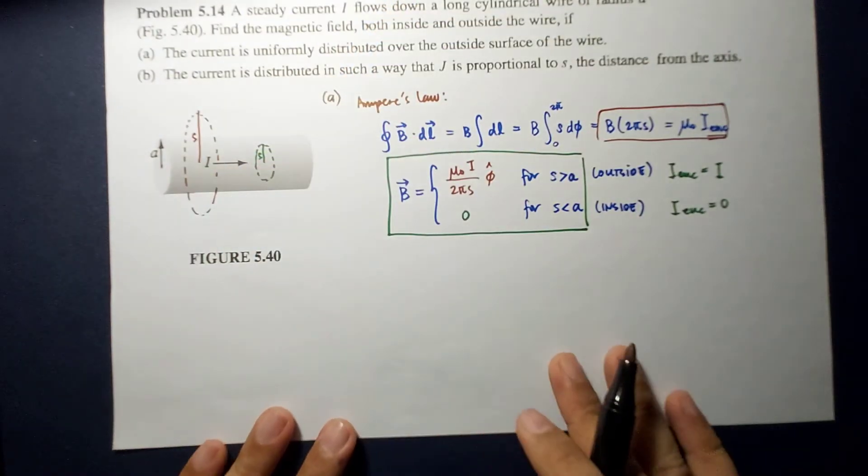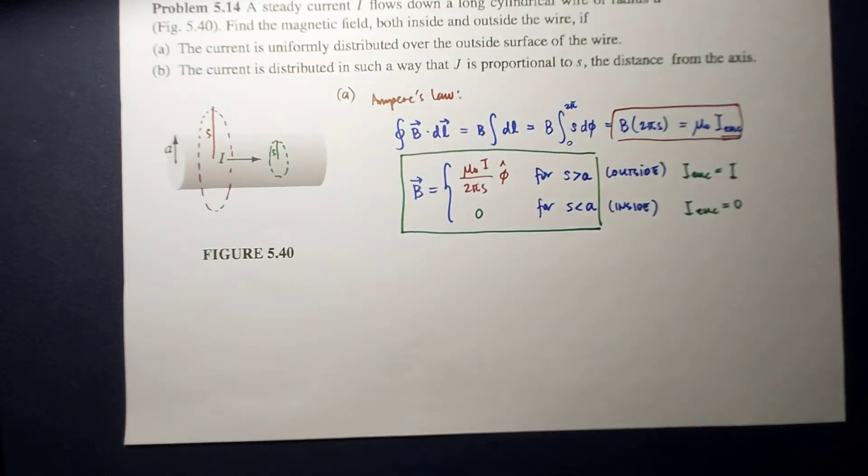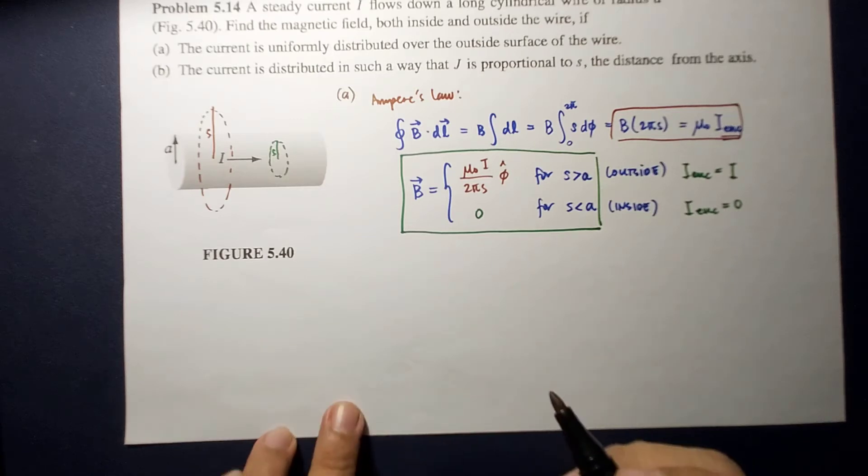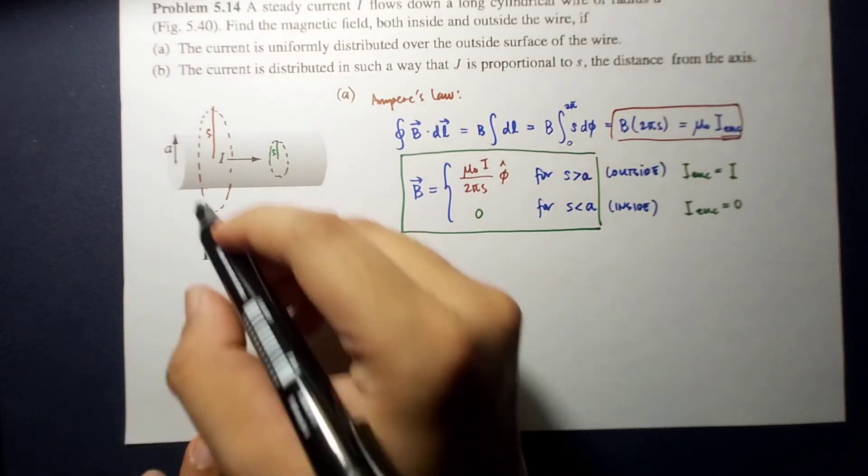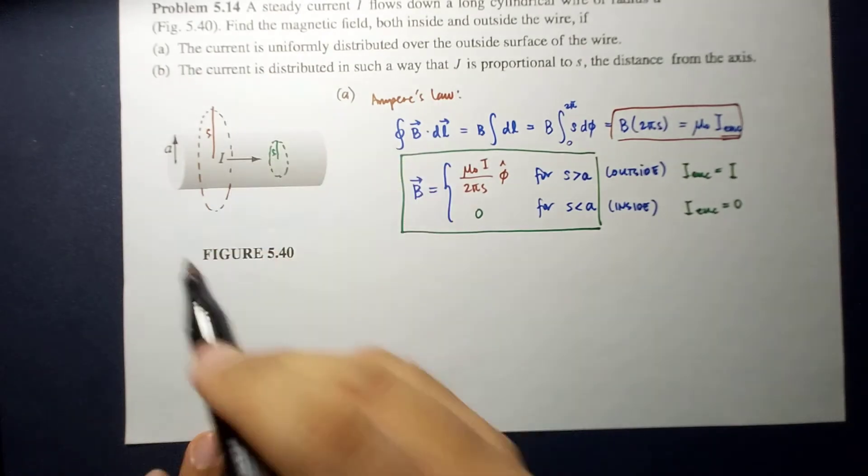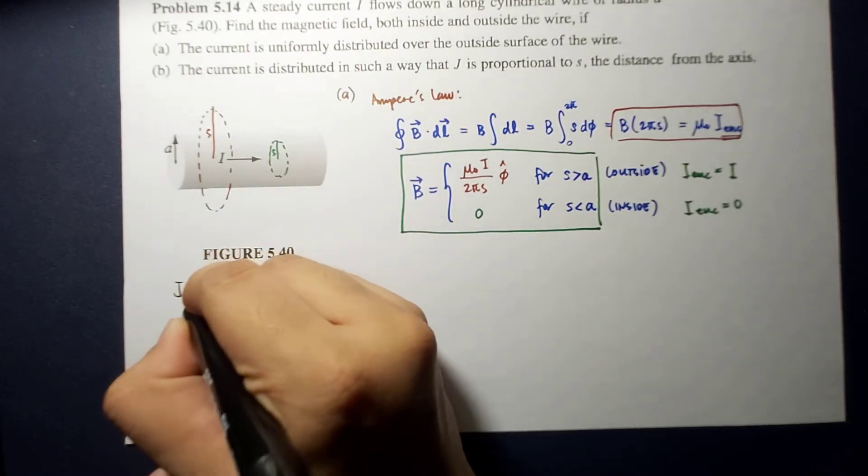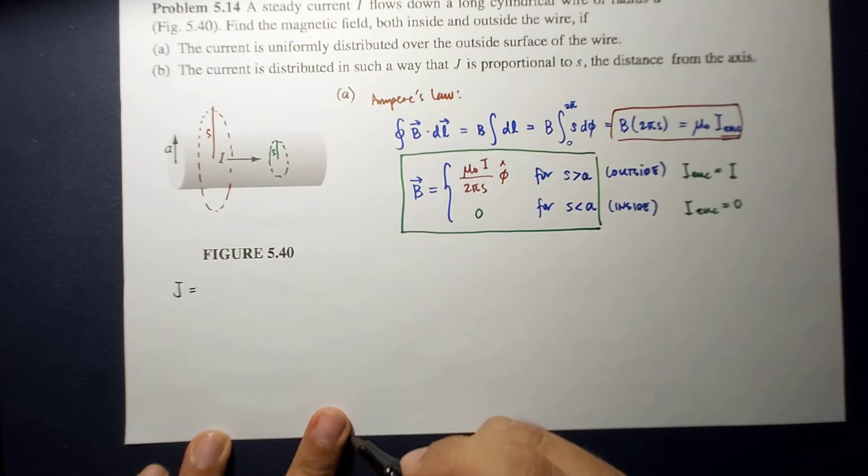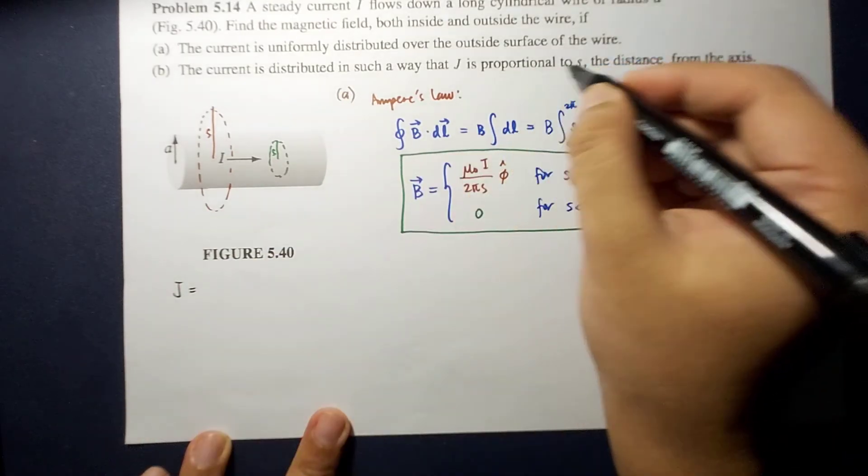again, this is for letter A. Again, the approach is the same. We still use the Amperes law. However, because of the peculiarity of the distribution,